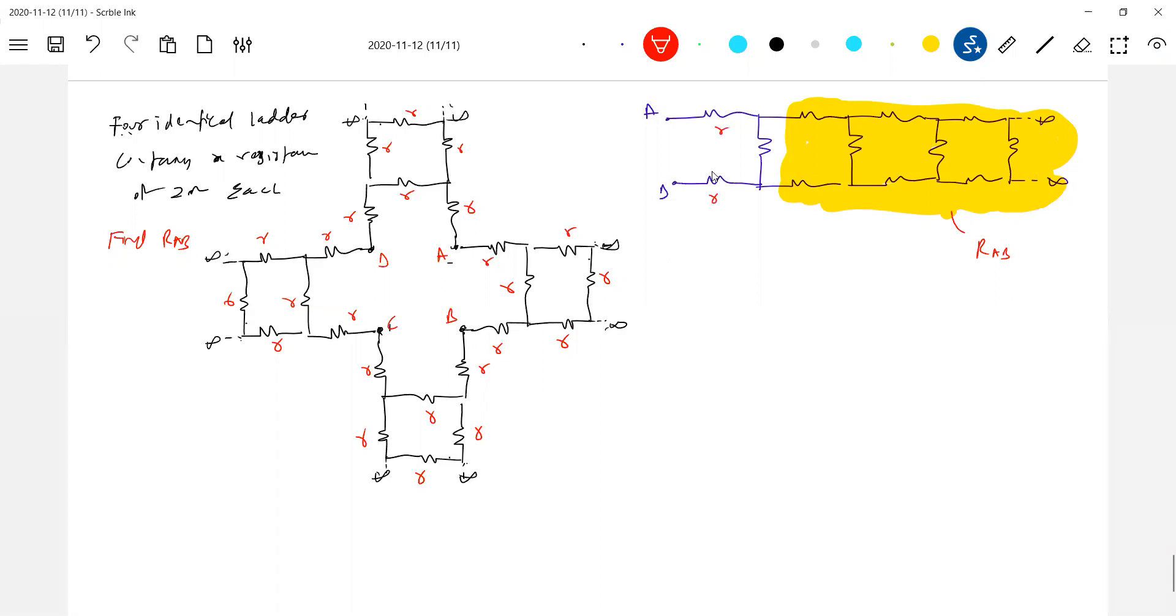And what are these? This is R. So here, what is the equivalent circuit? It will be R. This is RAB will come. And when you measure here, it will read RAB.